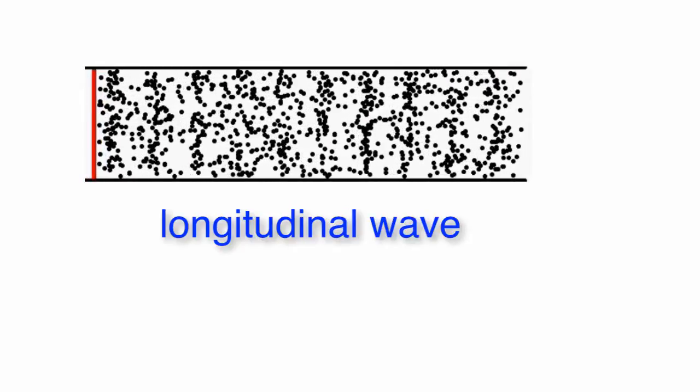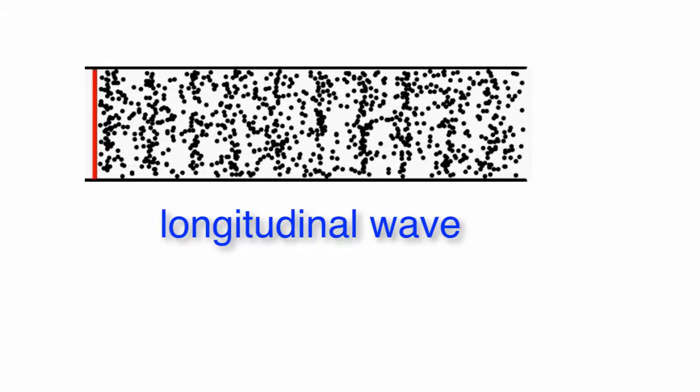What your eye is drawn to as you look at that top oscillation is that there's a pattern of lines which are moving to the right. Those lines correspond to the places in the tube where there's an over density and probably over pressure of the molecules in the tube.